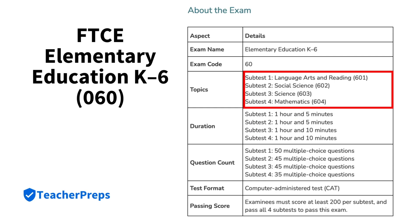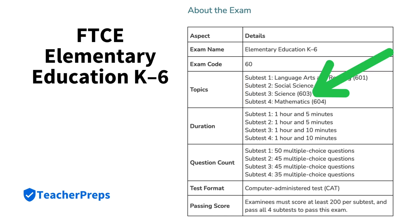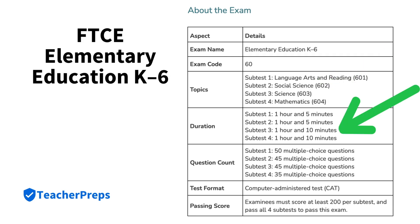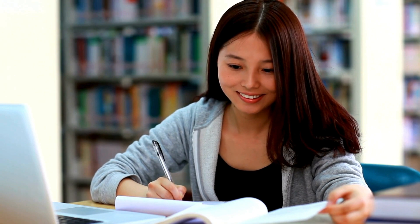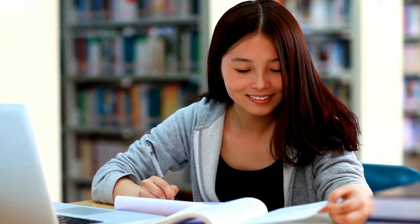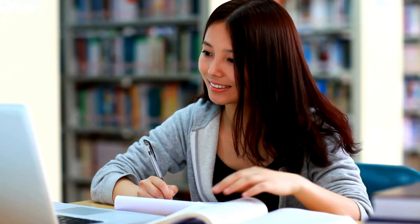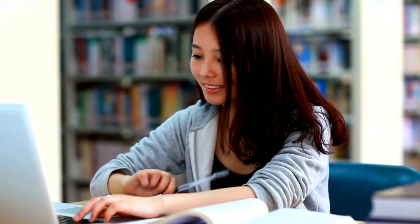The Elementary Education Test includes a total of four subtests, and this lesson focuses on Subtest 3, Science, where on exam day you will receive one hour and ten minutes to complete this subtest, which includes a total of 45 multiple choice questions. Now in order to help you get totally prepared, this practice test will guide you through the types of questions you can expect to see on exam day.